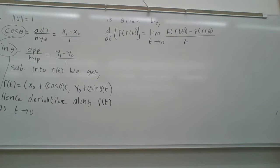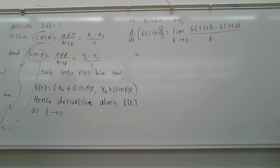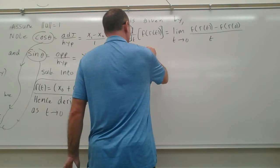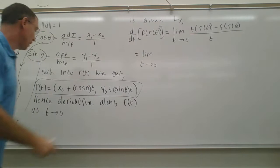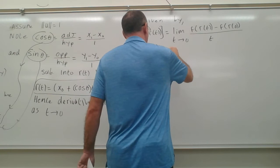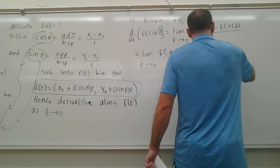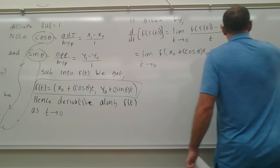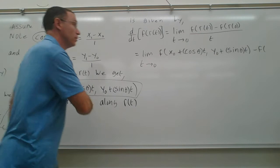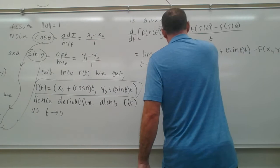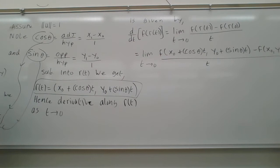Now r(t) is what we just figured out. So this equals the limit as t goes to zero of f(x₀ + cos θ · t, y₀ + sin θ · t) minus f(x₀, y₀), all over t — since r(0) is just (x₀, y₀). This is our derivative coming along the path.